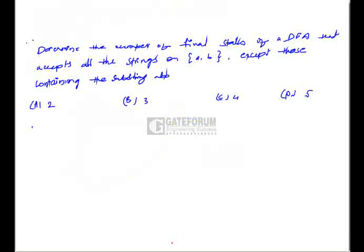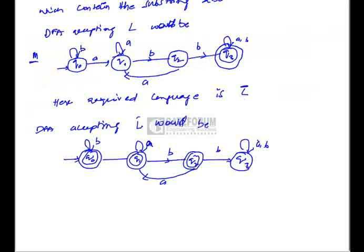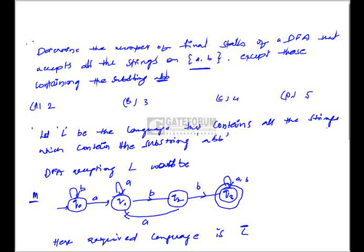Here we have to find the number of final states of a DFA that accepts all strings which do not contain the substring 'abb' over the alphabet {a, b}. Let L be the language that contains all strings which contain the substring 'abb'. The DFA accepting L is given; M accepts strings which contain the substring 'abb'.